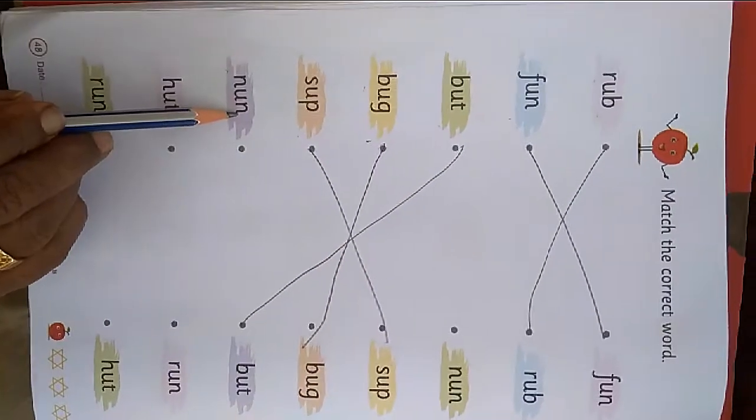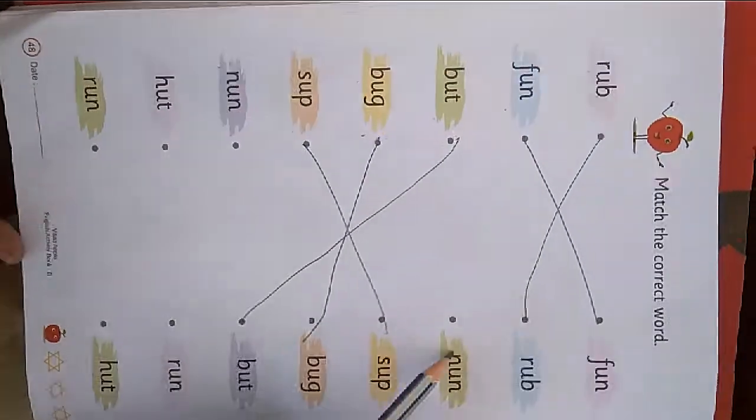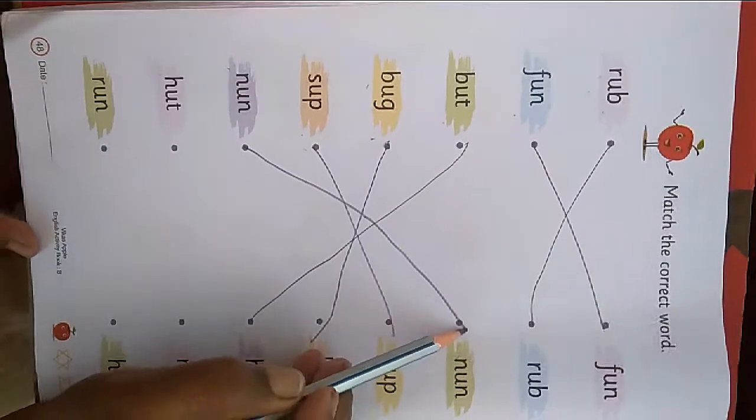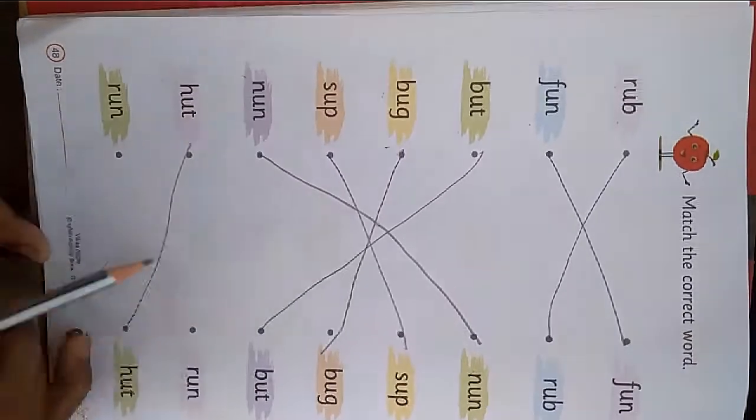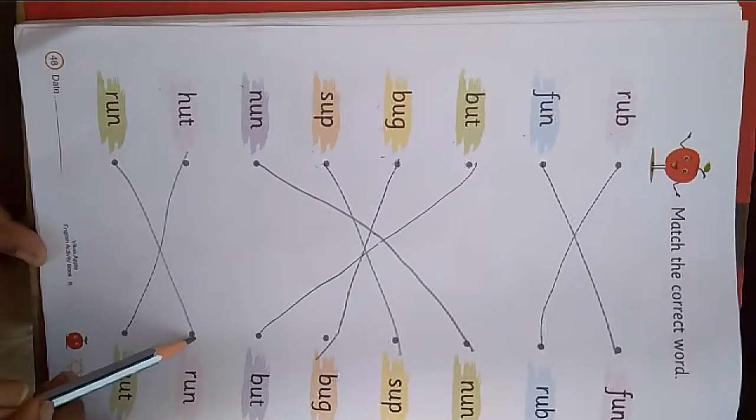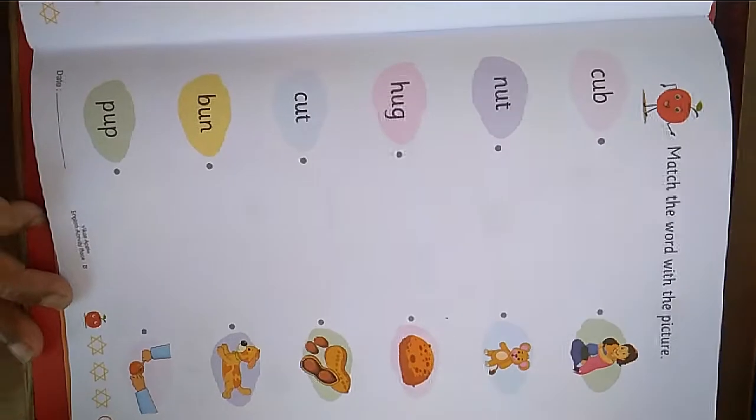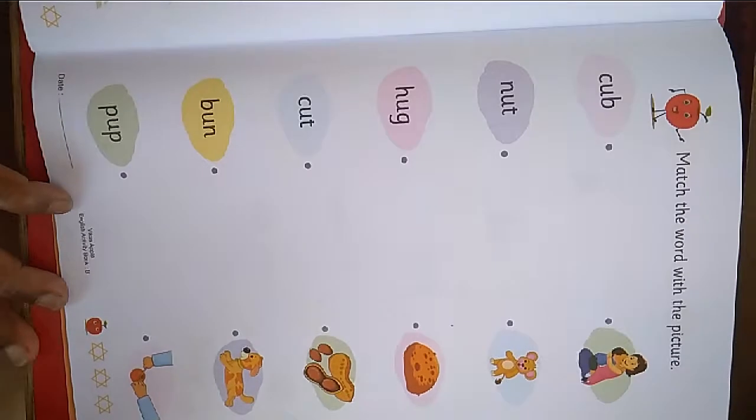N U N nun. H U T hut. R U N run. B U P pup. Next page number 49.